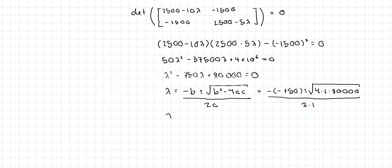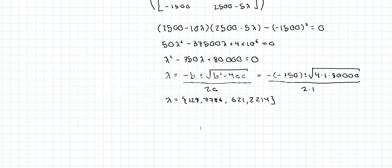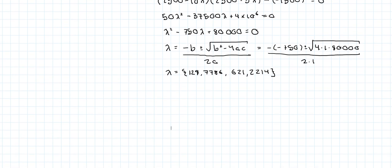So we get lambda is equal to... I think we get 128.7786 and 621.2214. Now, you always need to put these ones in ascending order.